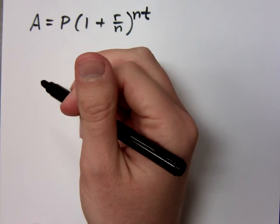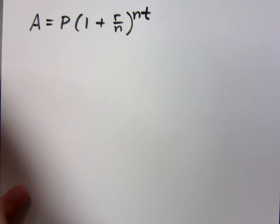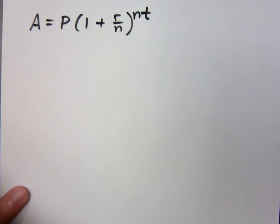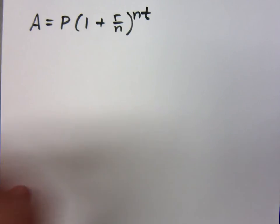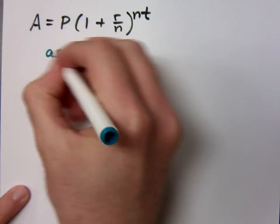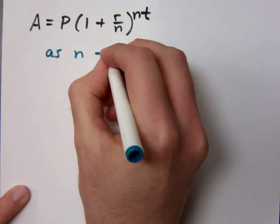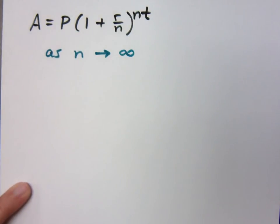This is the formula that we have for compound interest. Now what we're going to see is something really neat about this. You can play around with the numbers and see what happens. But as the number of compoundings increases, and especially if it increases without bound, as it approaches infinity...